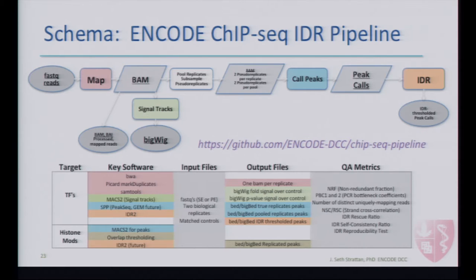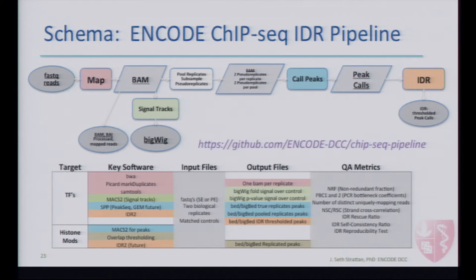Typically, we match controls to experiments. So if you have two replicates, you will also have two control replicates. However, the pipeline will run if you submit the same reads as both controls. We do a certain amount of read normalization between the two controls — if one control is very shallow and the other is very deep, we'll pool those and use that pooled control for both experiments.